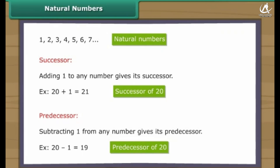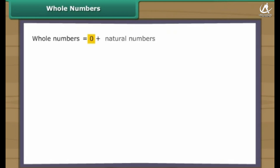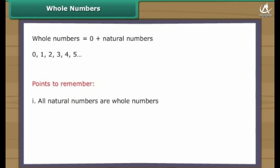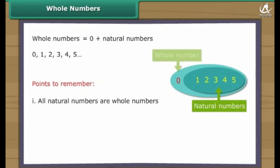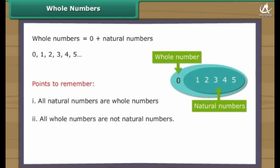Interesting question: what is the largest natural number? Whole numbers include zero and all the natural numbers. Points to remember: one, all natural numbers are whole numbers; two, all whole numbers are not natural numbers; three, there is no largest whole number.